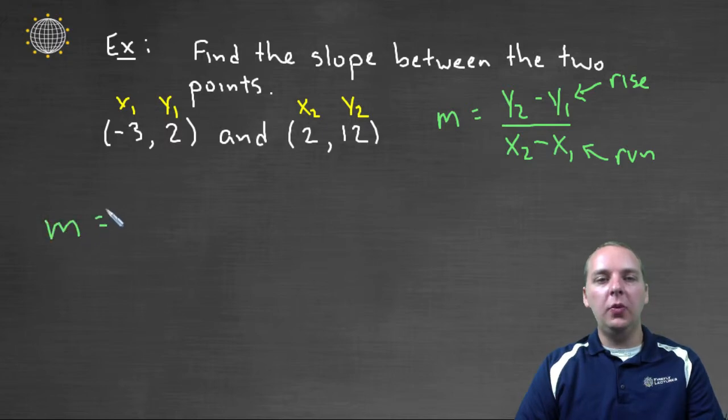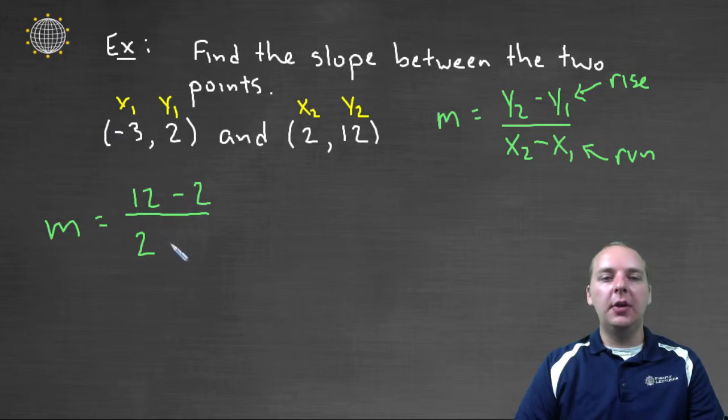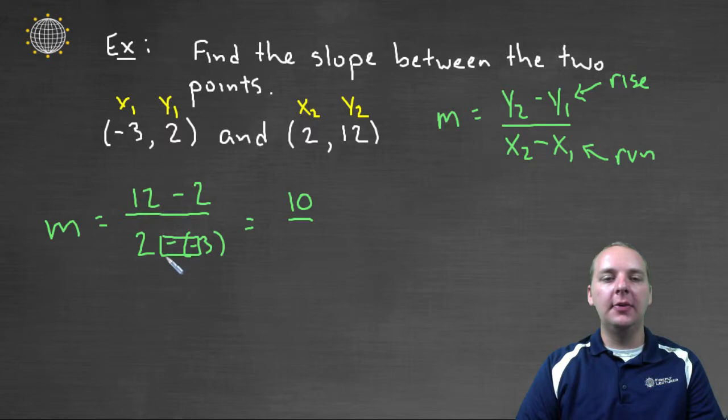So M would be y-two minus y-one, so that's twelve minus two, divided by x-two minus x-one. Now notice we have minus a negative, and that's totally okay, that's not a problem at all. The numerator, twelve minus two, gives us ten. And then as you well know, when you have minus a negative, that's going to turn into a plus. So three plus two is five. And so the slope is ten divided by five, which is two.